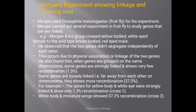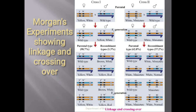Some genes are loosely linked because they are far away from each other, resulting in more recombinations. The genes for yellow body and white eye were strongly linked, showing only 1.3% recombination. White body and miniature wing showed 37.2% recombination. In cross 1, the parental type is 98.7% with 1.3% recombination; in cross 2, the parental type is 62.8% with 37.2% recombination. That is all about today's lecture — I hope you understood. Thank you very much.